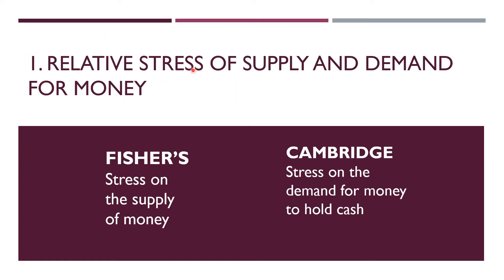Point number one is the relative stress on supply and demand for money. Fisher's approach stresses on the supply of money — the main focus is on money supply — whereas the Cambridge approach stresses on the demand for money, specifically the desire to hold cash for transaction and precautionary motives.